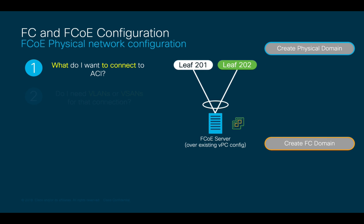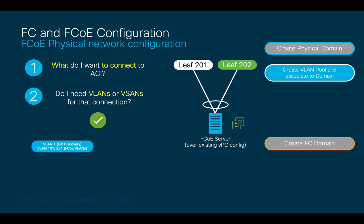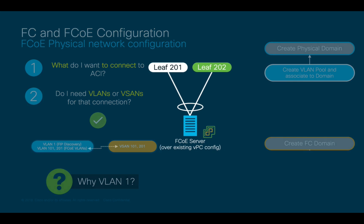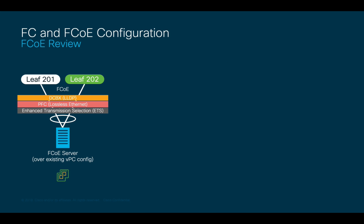The second question is: do I need VLANs or VSANs? The answer is pretty obvious — of course we do. In this case, we will need 3 VLANs in a VLAN pool associated to my physical domain. I will add VLAN 1, and FCoE VLANs 101 and 201. VLANs 101 and 201 will be used as Fiber Channel over Ethernet VLANs to transport VSAN 101 and VSAN 201 respectively. But what about VLAN 1? Let's take a step back and remember a few FCoE concepts. Hopefully you remember that FCoE relies on FCoE Initialization Protocol, or FIP, which instantiates a virtual Fiber Channel interface and allows an end device to perform a fabric login, or Floggy.